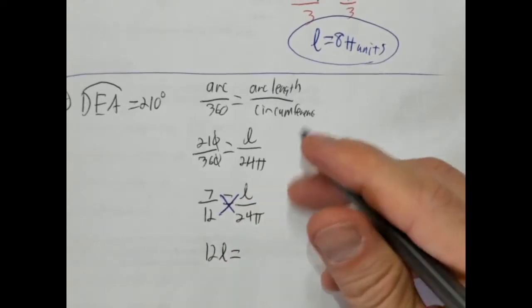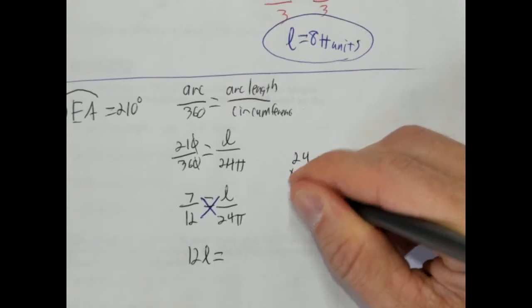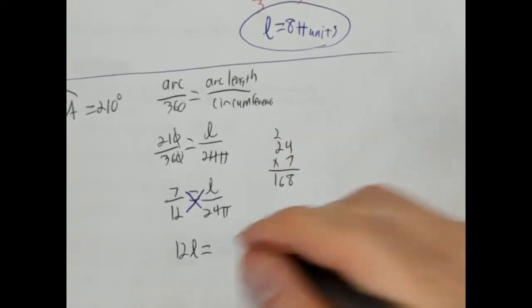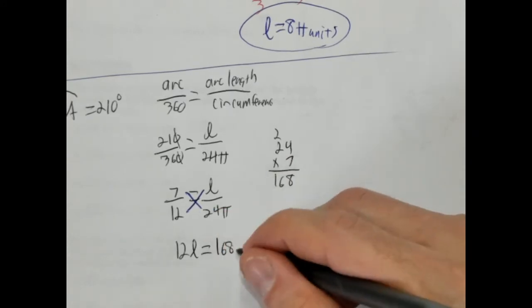So we're going to say 12 times L is 12L. And 7 times 24, let's do that out. 7 times 24. 28 carrying 2, 14, 168. And that should be pi.